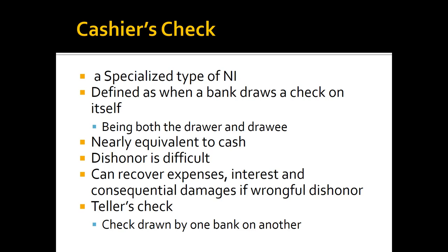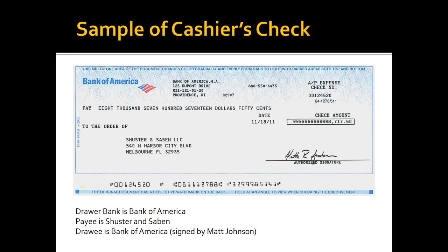There is also a subcategory called teller checks — this is when a bank draws a check on another bank. Almost all banks maintain accounts in other banks. For instance, if BB&T and Wells Fargo are both cashing checks for each other, it's convenient to issue checks to each other — that's called a teller's check. On the cashier's check sample shown, the amount is $78,717, the drawer is Bank of America, signed by Matt Johnson, and it's payable to Schuster and Sabin LLC.